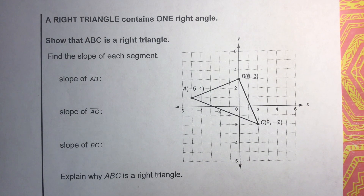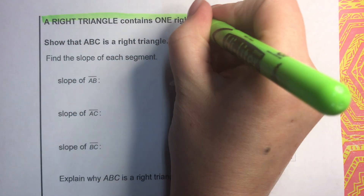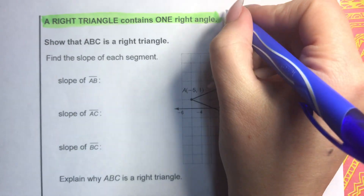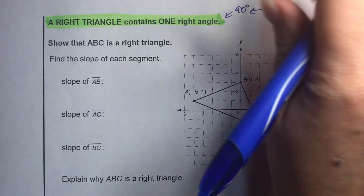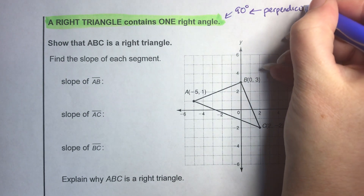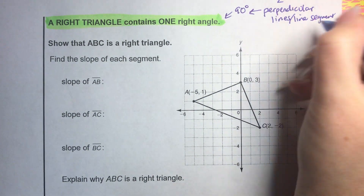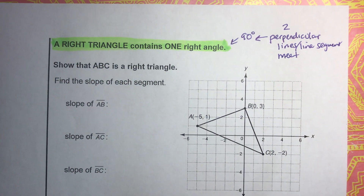We're going to look at another geometry application involving right triangles. A right triangle contains one right angle, which means 90 degrees — essentially two perpendicular lines or line segments. When two perpendicular line segments meet, they have slopes which are opposite signs and reciprocals of each other.